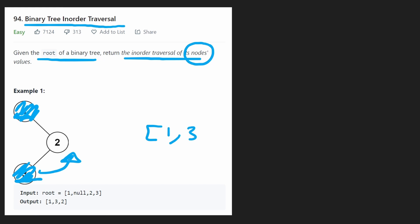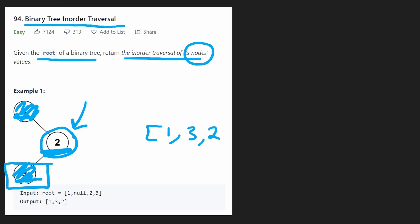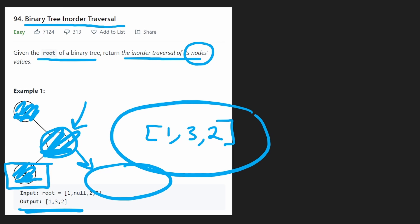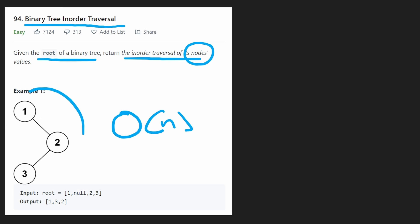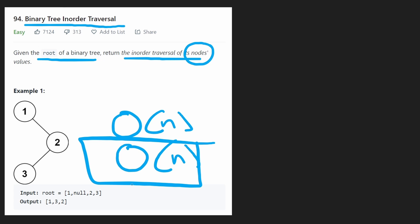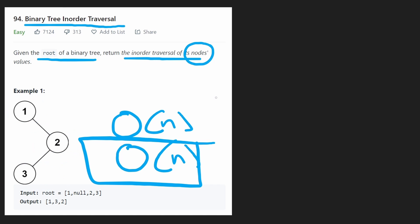We go back up to our parent node. Since we just went through the entire left subtree, now it's time to process this node — the value is 2. We add that to our result, and then we go to the right subtree, but it doesn't have one. So we're done. That's the entire result: 1, 3, 2 — the same as expected. Overall time complexity is O(n) because we visit every single node. Memory complexity in the worst case is also O(n) because of the function call stack — we have to put parent nodes on the stack before we can pop back up to them. We'll go into more detail on the stack when we do the iterative solution.